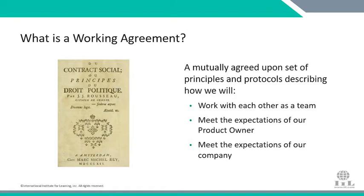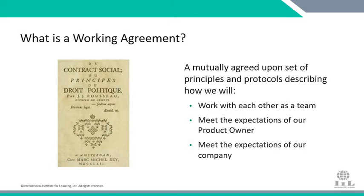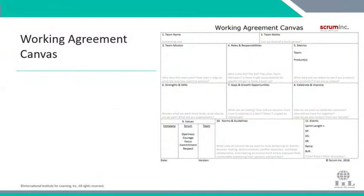A working agreement comes out of the idea from Jean-Jacques Rousseau, who wrote The Social Contract hundreds of years ago. The idea is that within any culture or group of people, there is an unwritten code of behavior — and in a really high-functioning society, they write those rules down, like a constitution. Any social contract is a mutually agreed-upon set of principles describing how we work with each other as a team, including protocols to meet the expectations of our product owner, our larger company, our stakeholders, and our customers.